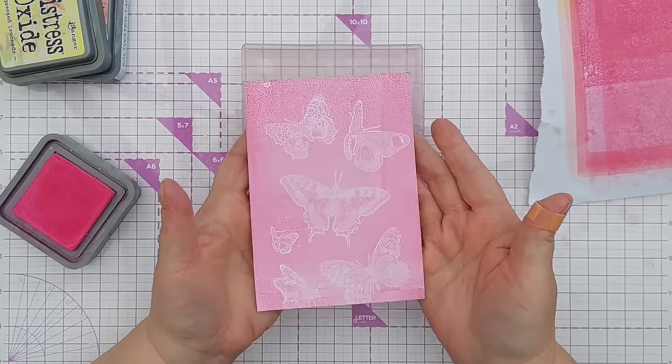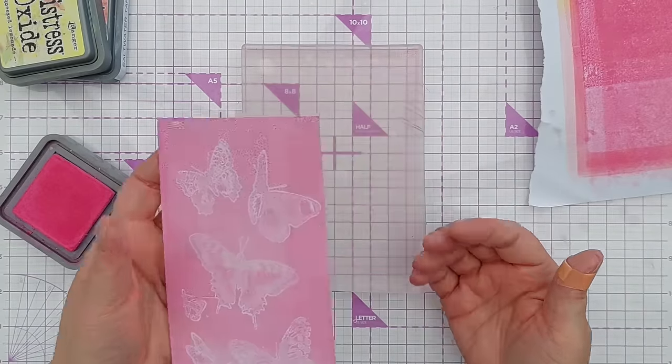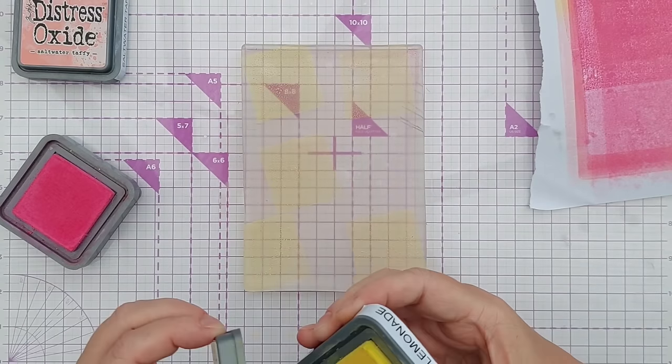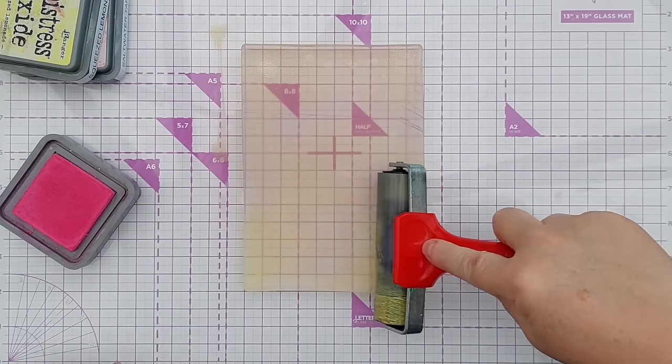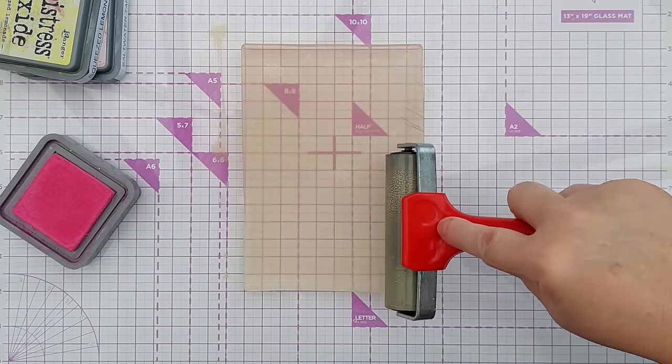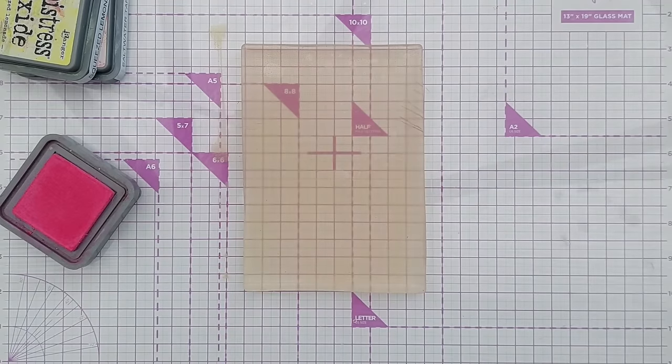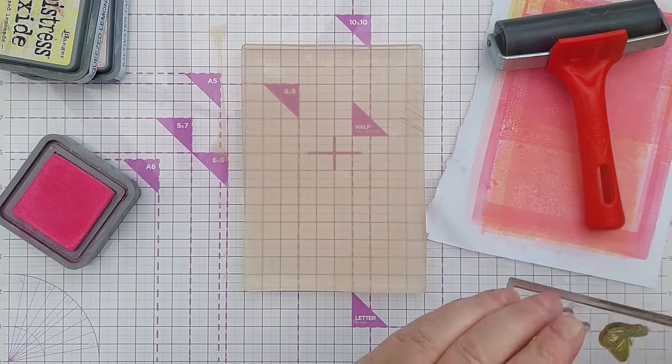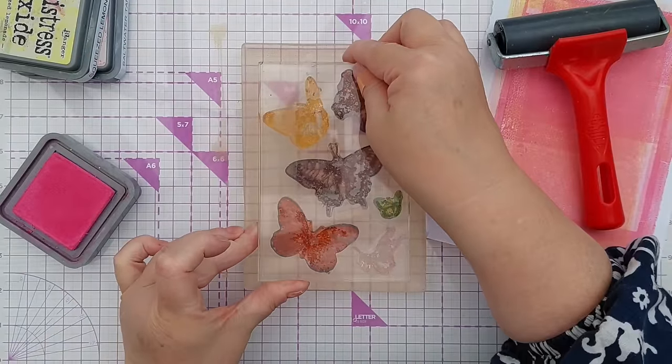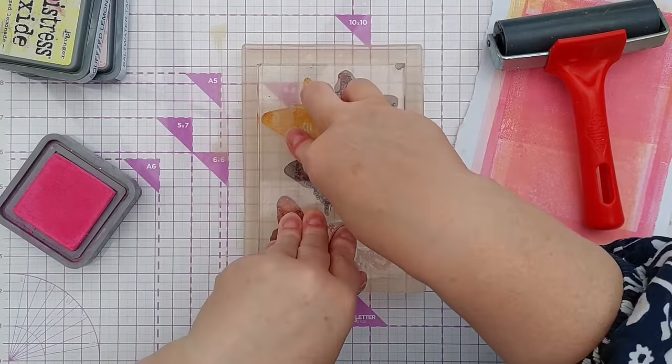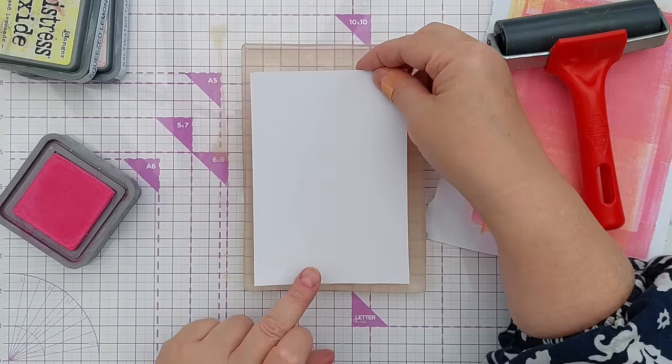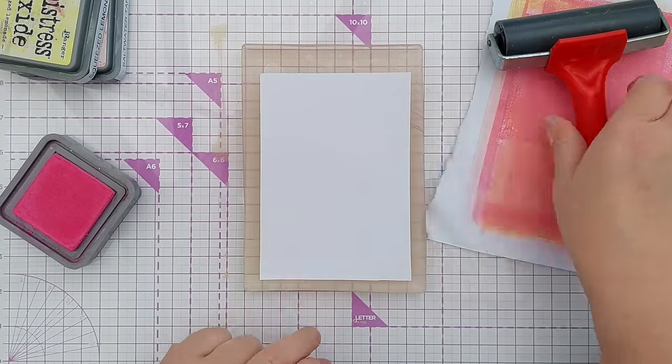So there we have a lifted stamped image. I will put some squeezed lemonade back on here. I haven't cleaned my brayer so that squeezed lemonade is going to mix with whatever ink was on my brayer, and there should be some pink ink on there which I can put hopefully on here.